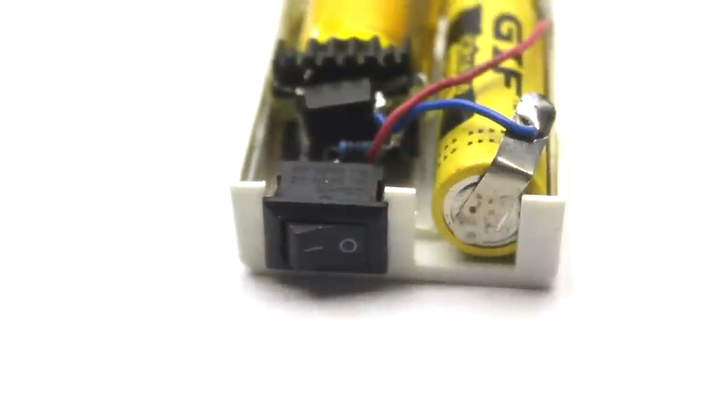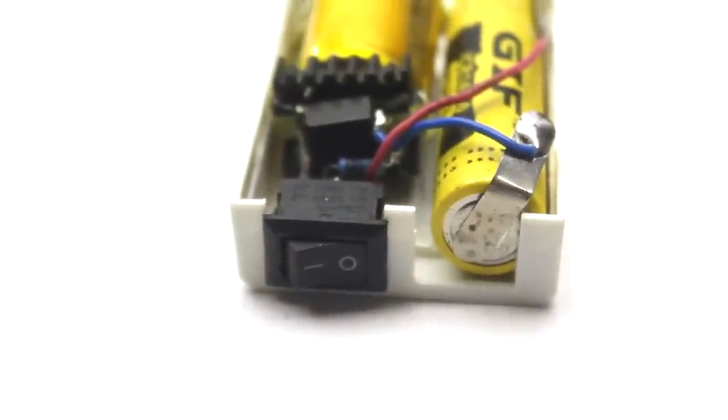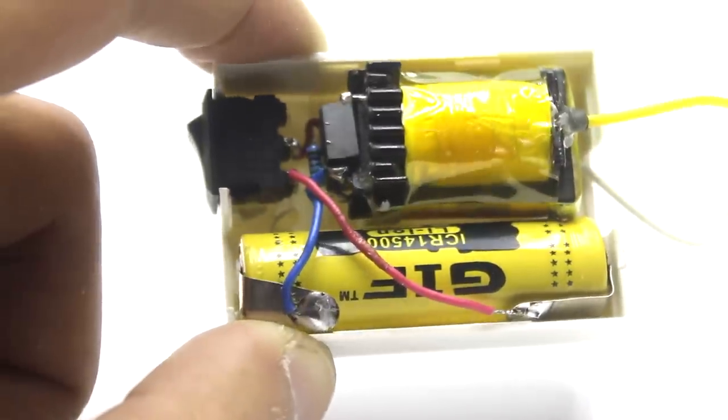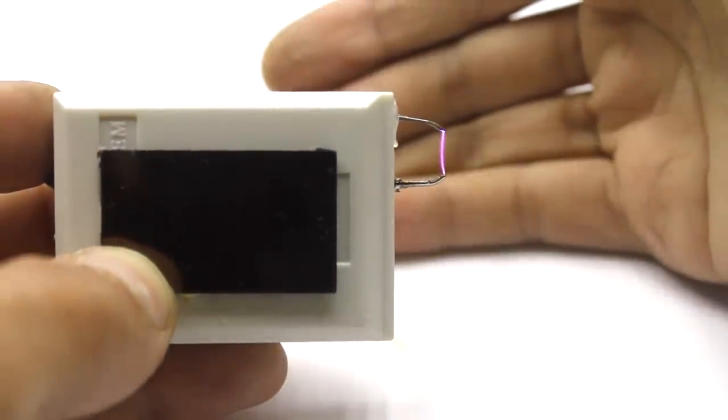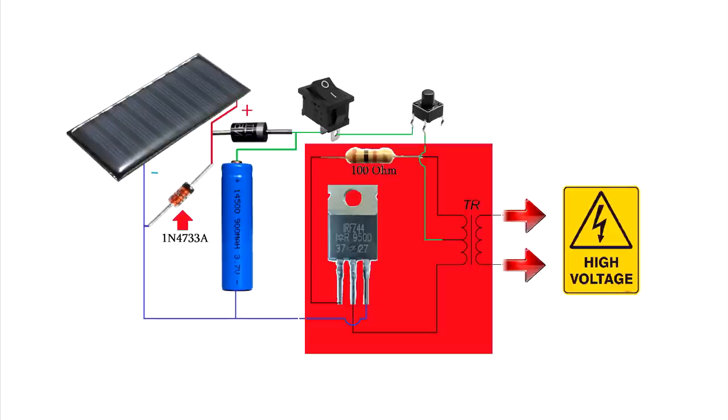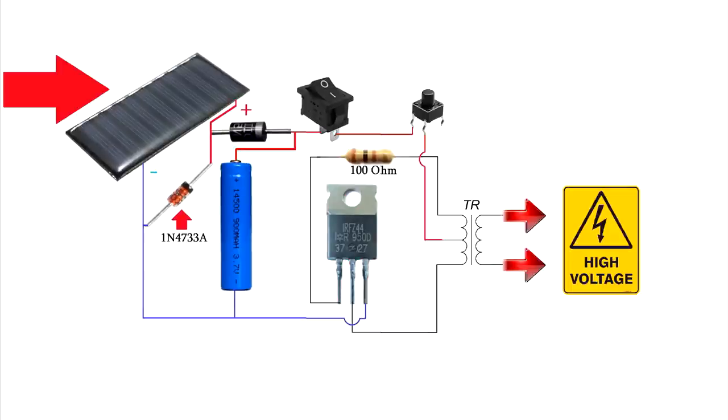But we are electronic fans, so we don't really care about mechanical primitive technologies. We will make our electronic version. Our version of Electric Arc, or Plasma Eternal Lighter, consists of a power source, a high voltage voltage converter, and a solar module as a battery charging unit.